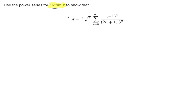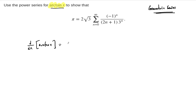How are we going to do that? The only real tool that we have right now is the geometric series — everything that we've done has been related somehow to the geometric series. We can remember that the derivative of arctangent of x is equal to 1 over 1 plus x squared. This looks like it's in the form of a geometric series, so we can rewrite this as 1 over 1 minus negative x squared.